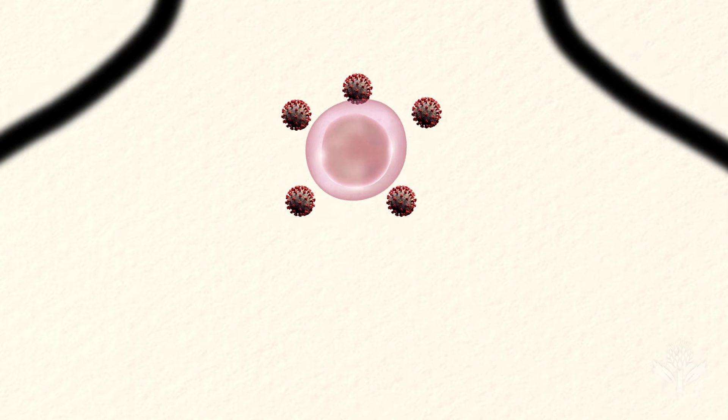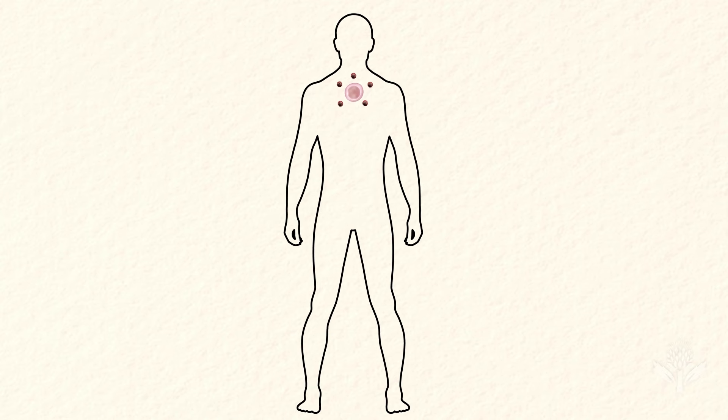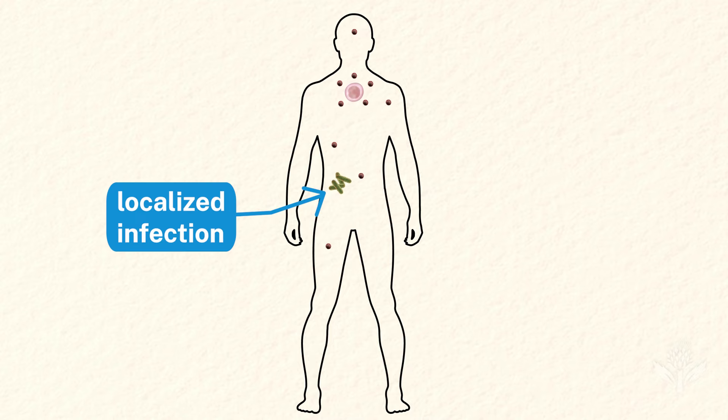Once viruses multiply, they leave the host cell and spread to infect other cells, sometimes throughout the rest of the body. On the other hand, bacterial infections are usually confined to a single area of the body in what is known as a localized infection.